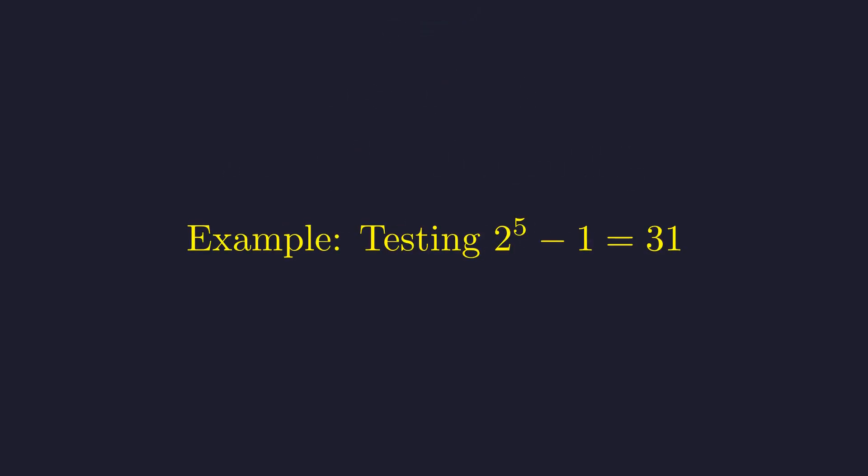Sounds mechanical, right? But it works beautifully. Let's take a smaller example. Suppose p equals 5. Then the candidate number is 2 to the 5th minus 1 equals 31.